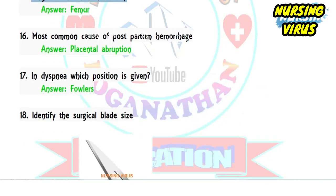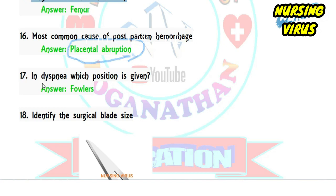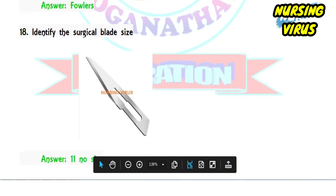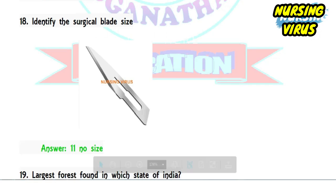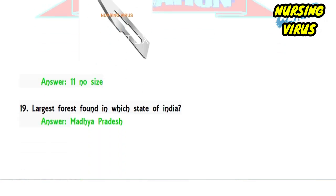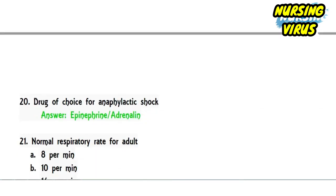Question 16: the most common cause of postpartum hemorrhage is uterine atony (placental abruption noted in transcript). Question 17: for dyspnea, which position is recommended? Fowler's position is recommended for patients with breathing difficulty. Question 18 was image-based — a surgical blade was shown, and the correct answer is size 11 blade. Question 19: the largest forest in India is found in Madhya Pradesh.